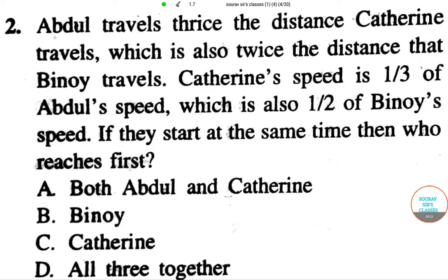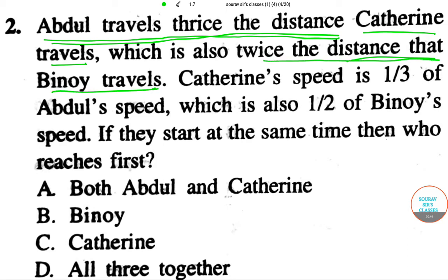We have a question: Abdul travels thrice the distance Catherine travels, which is also twice the distance that Binoy travels.